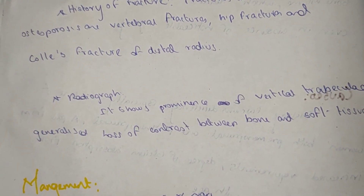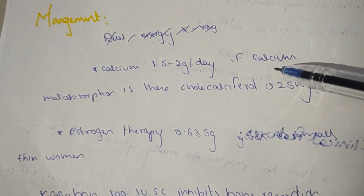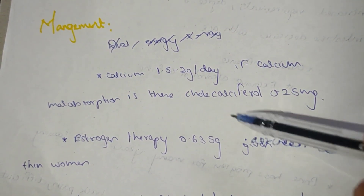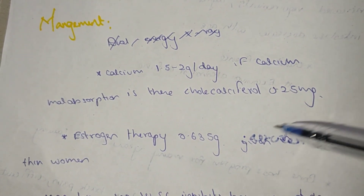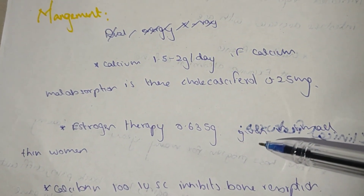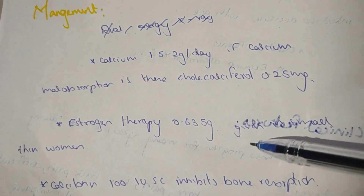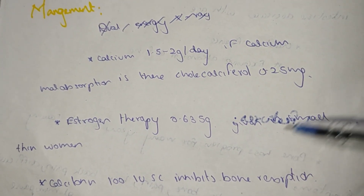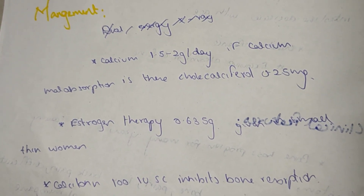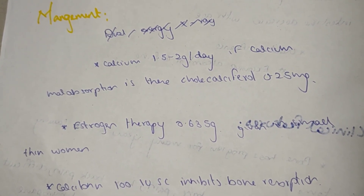Management: calcium 1.5 to 2 grams per day is given. If calcium absorption is impaired, hydroxycalciferol 0.25 mg is given. Estrogen therapy 0.625 mg is given, especially in thin menopausal women. Calcium deficiency is a major cause of osteoporosis.